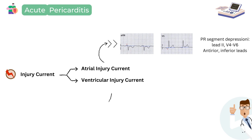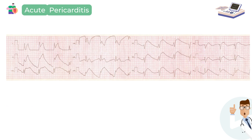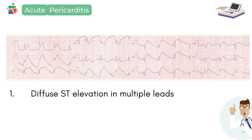On the other hand, the ventricular injury current in acute pericarditis is directed downward and to the left, and this causes ST elevation in multiple leads, other than in lead AVR. One of the classical ECG features of acute pericarditis is therefore diffuse ST elevation in multiple leads, and this is the reason why it can be confused with ST elevation MI.